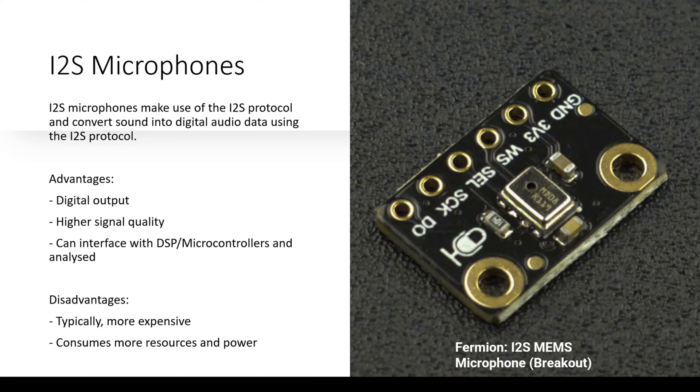An I2S microphone makes use of the I2S protocol which stands for Inter-IC Sound, not to be confused with I2C, and this converts sound into digital audio data using the I2S protocol. So again it is a digital output. With the digital output we reduce noise susceptibility because we only have ones and zeros at that point, and we have some quite good tolerances with it. We also got higher signal quality because it's already in that digital format and we can interface with a DSP or microcontroller and analyze this.